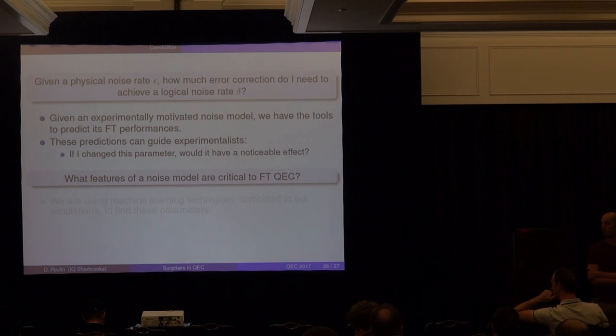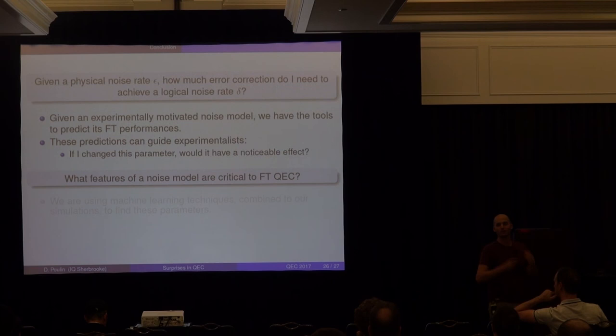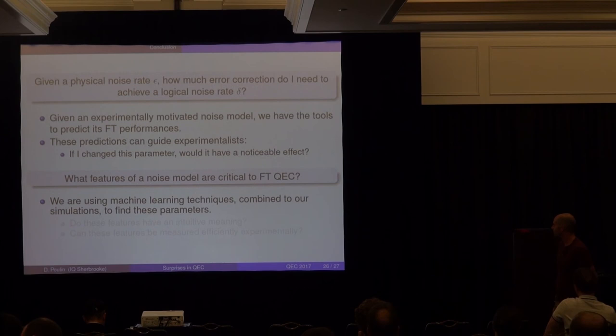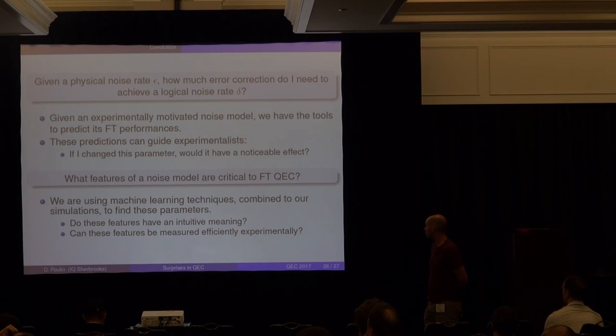Another idea: we have a database of hundreds of thousands of channels with known error correction performance. Can we use machine learning to learn the critical parameters? Pavitran will present a poster with partial results, though it doesn't work so well yet — it seems like a tough problem. If such critical parameters could be identified and shown to have intuitive meaning and be experimentally measurable, that would be very valuable. The speaker thanks the audience and mentions open positions in Sherbrooke.